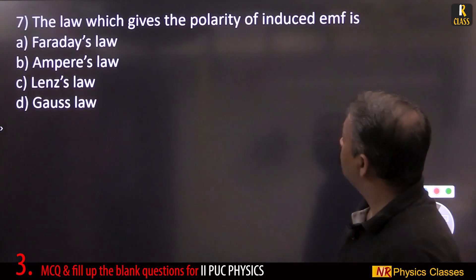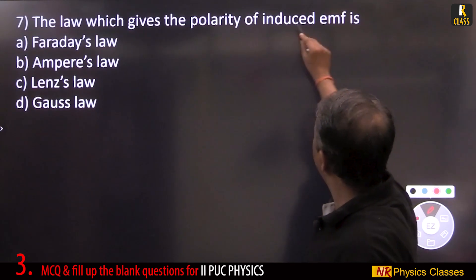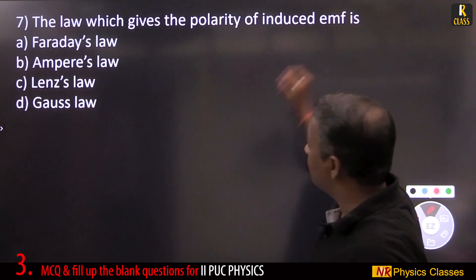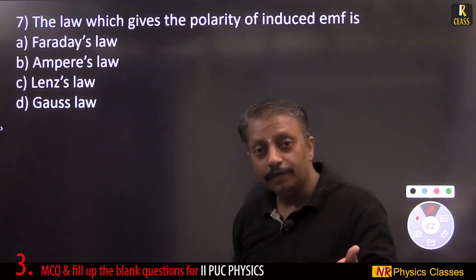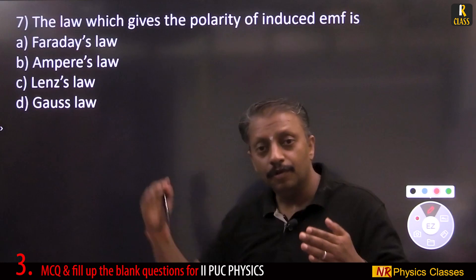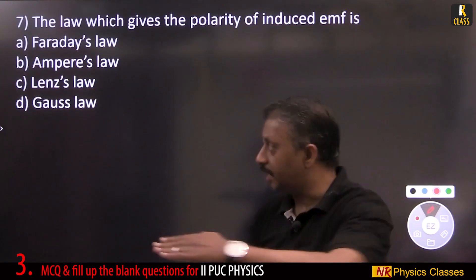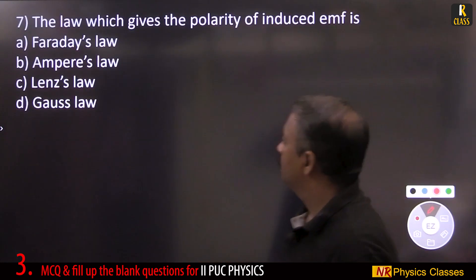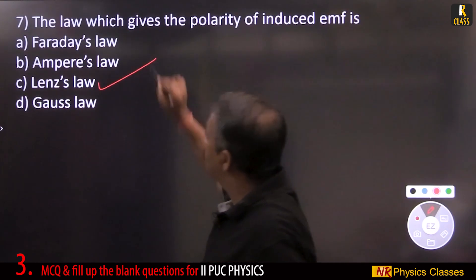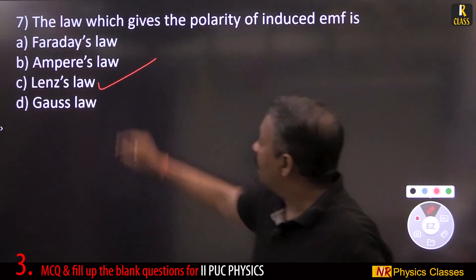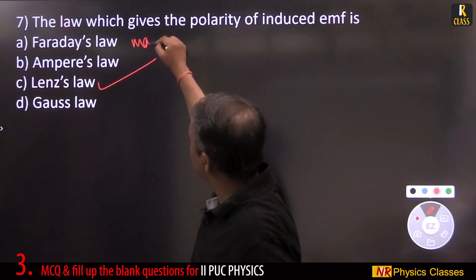The law which gives the polarity of induced EMF is Lenz's law. Faraday's law gives the magnitude of the induced EMF, while Lenz's law gives the polarity — or the direction of induced current.